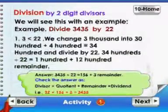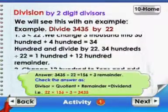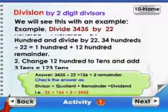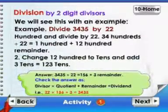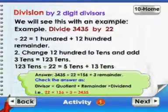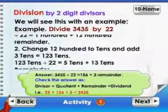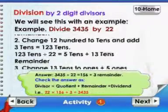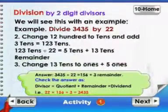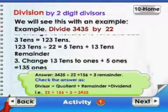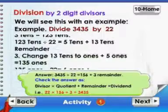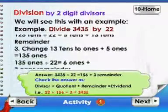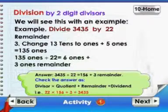We change 3000 into 30100 plus 400. That is, 3400 divided by 22 is equal to 100 plus 1200 remainder. Change 1200 to tens and add 3 tens, that is equal to 123 tens. 123 tens divided by 22 is equal to 5 tens plus 13 tens remainder. Change 13 tens to ones plus 5 ones is equal to 135 ones. 135 ones divided by 22 is equal to 6 ones plus 3 ones remainder.